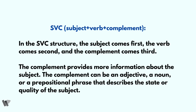The next structure is the SVC structure, which simply means subject-verb-complement: subject plus verb plus complement. In the SVC structure the subject comes first, the verb comes second, and the complement comes third. The complement provides more information about the subject. The complement can be an adjective, a noun, or a prepositional phrase which describes the state or quality of the subject.